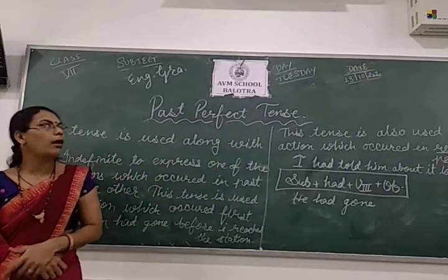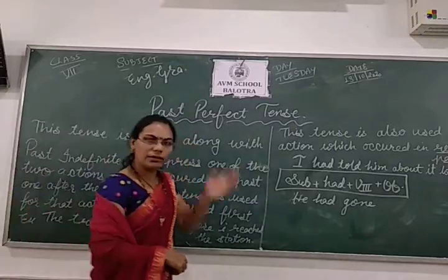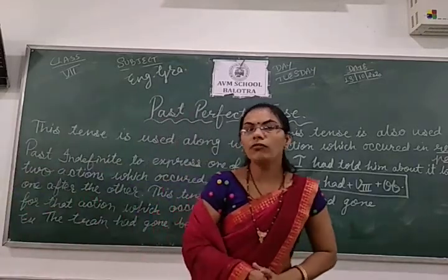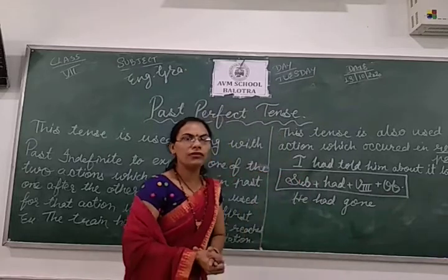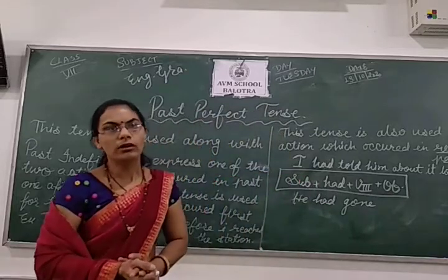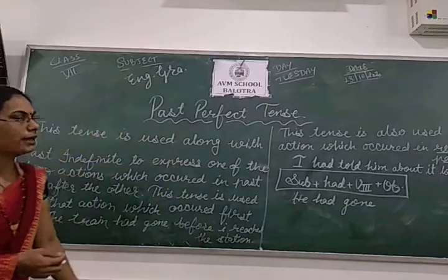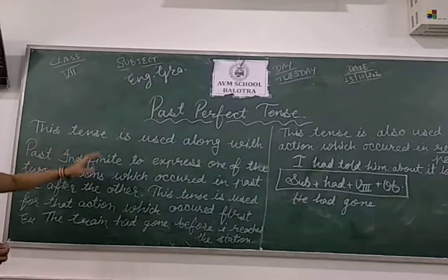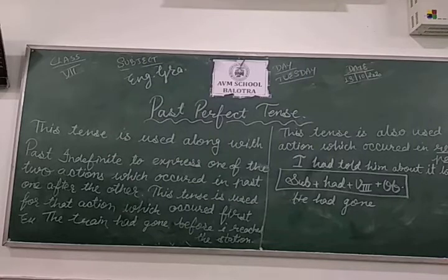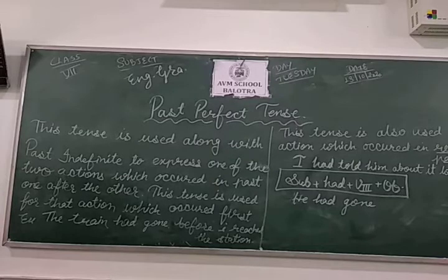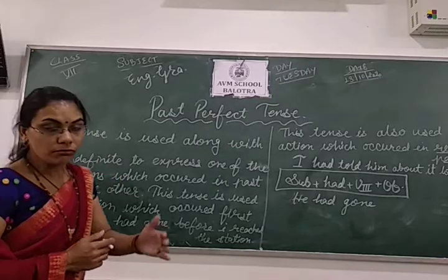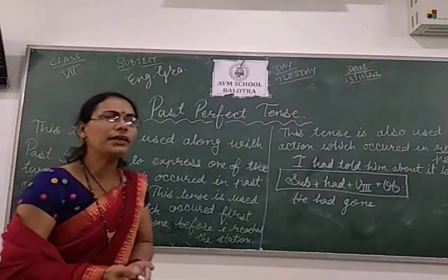Today we read about the past perfect tense. In our last video, we completed past indefinite and continuous tense. Now, where do we use past perfect tense? This tense is used along with past indefinite tense to express one of the two actions which occurred in the past, one after the other.